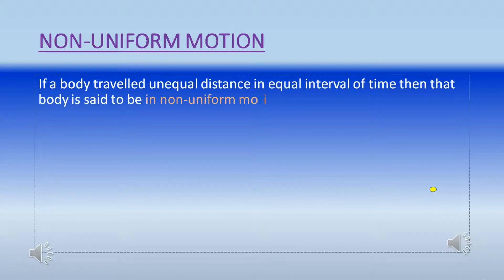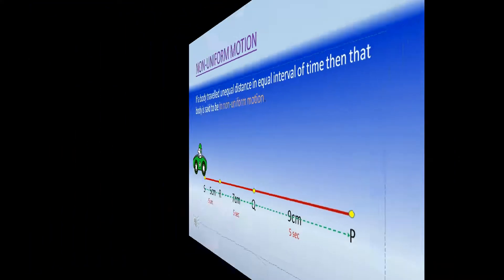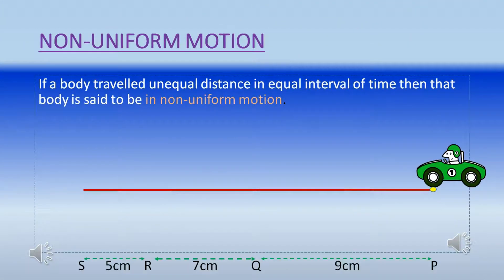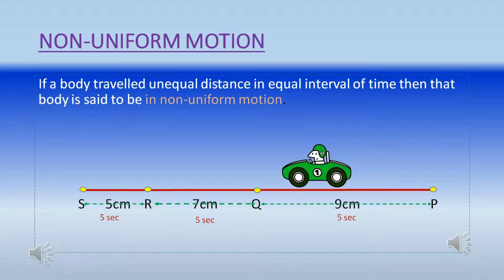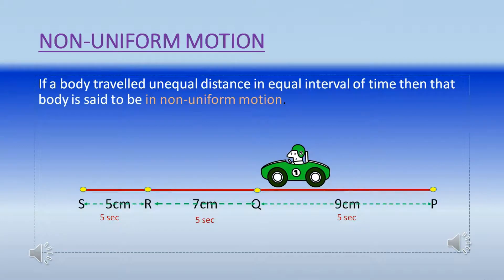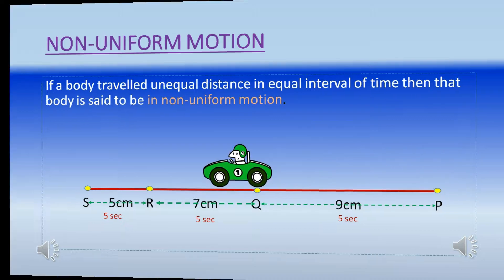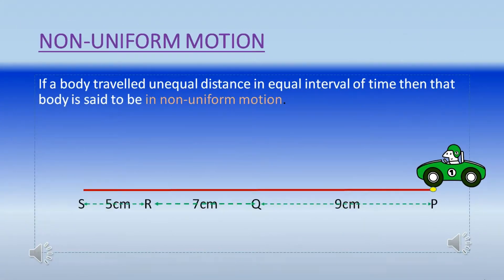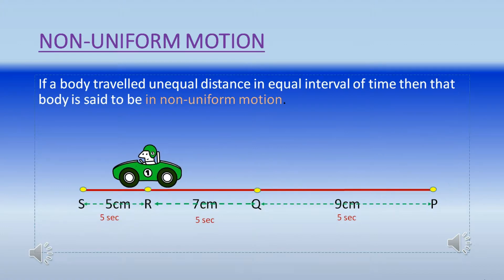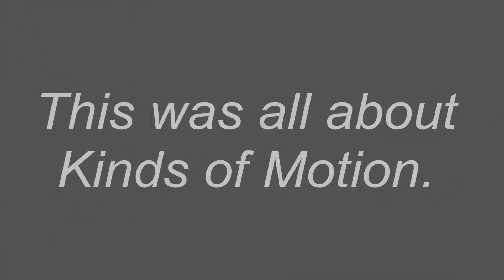If a body travels unequal distance in equal interval of time, then the body is said to be in non-uniform motion. Here I am showing a car that covers nine centimeters, seven centimeters, and five centimeters distances in equal interval of times, that means in five seconds. Here we're watching that the car is moving unequal distances from P to this place at the end. It covers three parts of the distance like nine centimeters, seven centimeters, and five centimeters, and it takes equal time of the interval, that is five seconds.